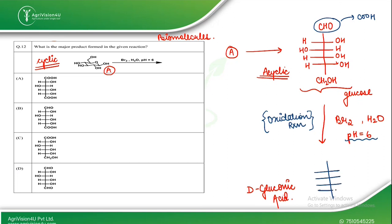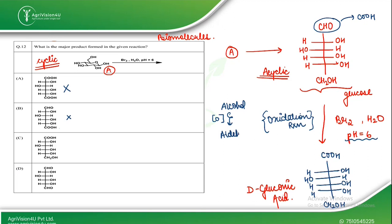Looking at the options: one option has both groups getting oxidized — that is not correct. Another has the primary alcohol getting oxidized — also not correct. We know the oxidation series: alcohol first becomes aldehyde, then aldehyde converts to acid. So only the aldehydic group is oxidized here. The correct option is C1.